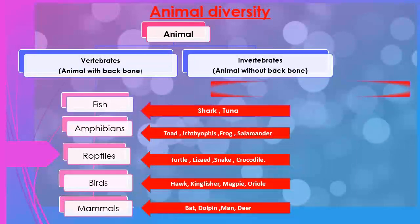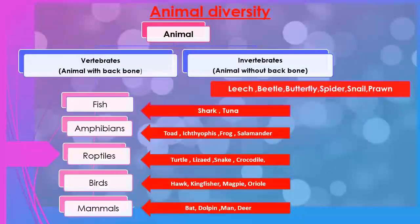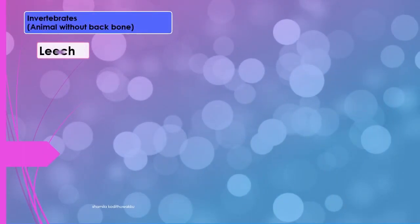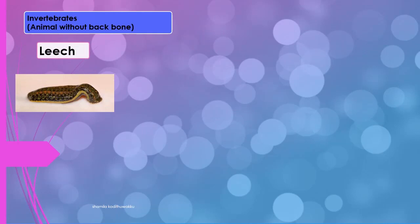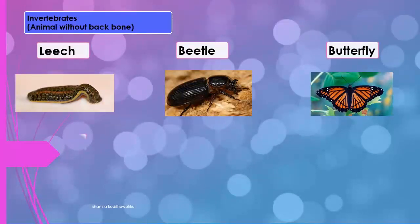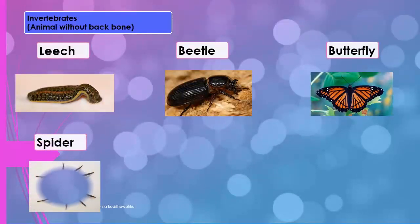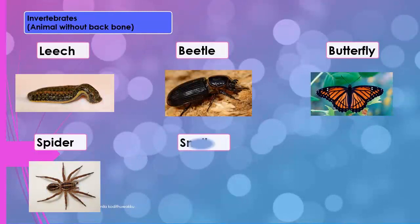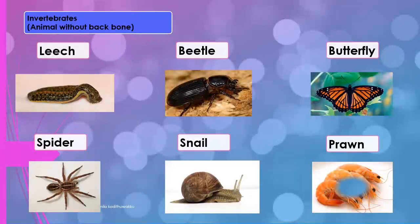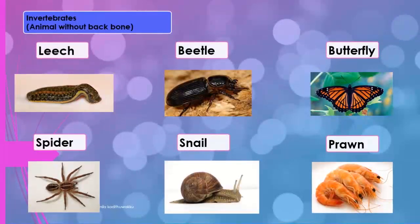Now we discuss invertebrates. Examples of invertebrates include leech, beetle, butterfly, spider, snail, and prawn. All these animals are without a backbone.